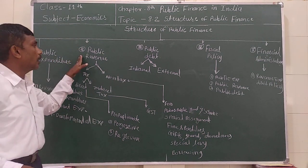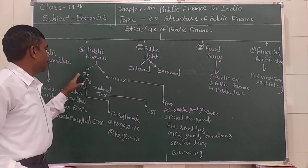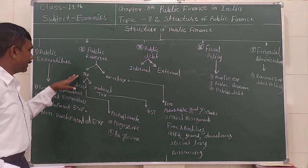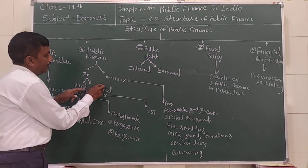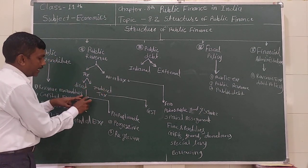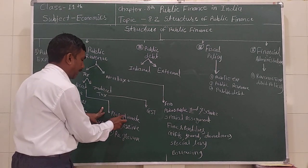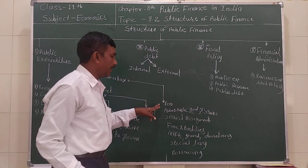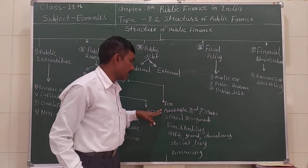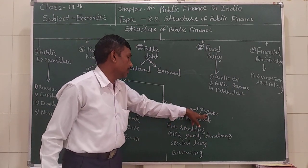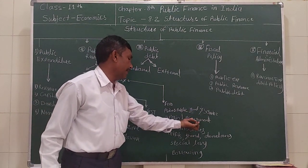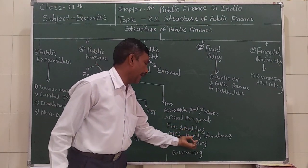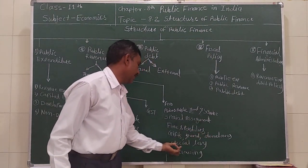The second part is public revenue, which includes tax and non-tax revenue. Under taxation: direct taxation and indirect taxation. Direct taxation covers corporate and personal income tax, progressive and regressive taxes. Non-tax revenue includes fees for public services, price of public goods, special assessments, fines and penalties, gifts, grants, and donations.